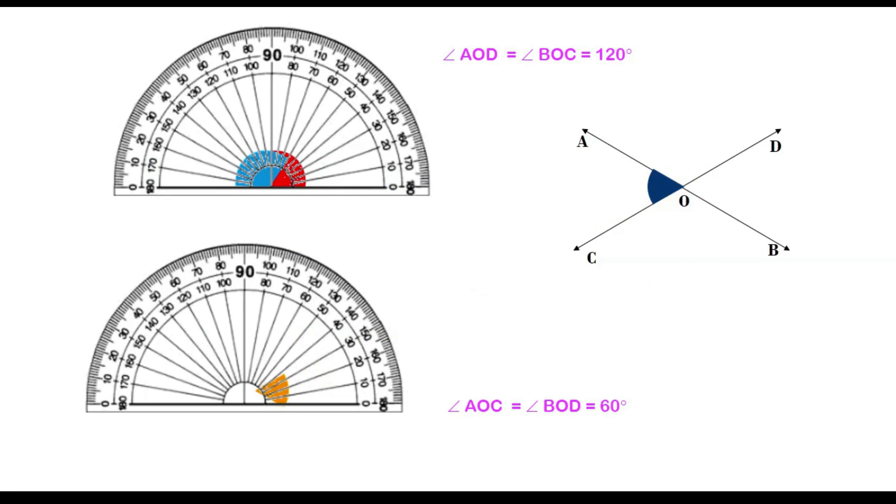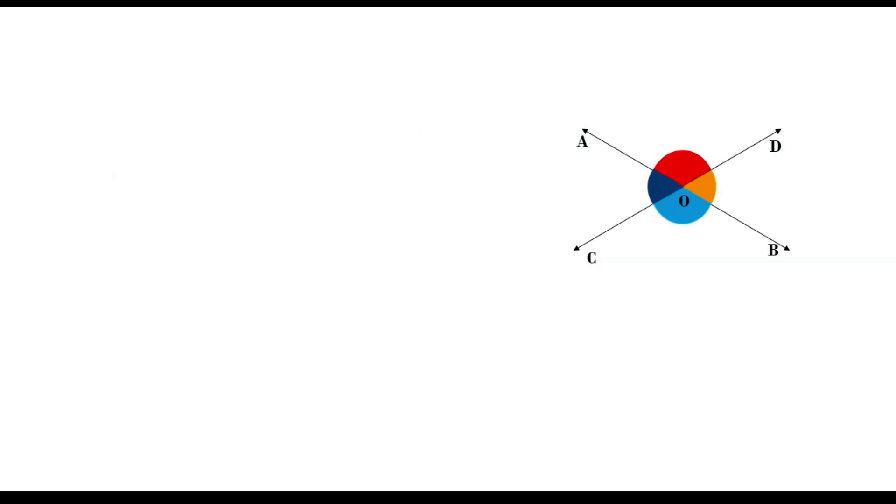Now we can observe that the vertically opposite angles are always equal. The measurement of angle AOD equals the measurement of angle BOC, and the measurement of angle AOC equals the measurement of angle BOD. Hence, we can visualize that vertically opposite angles are always equal.